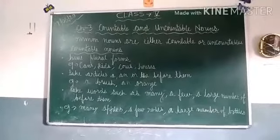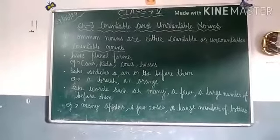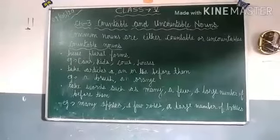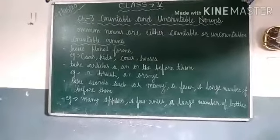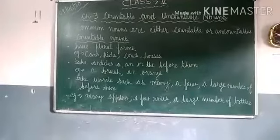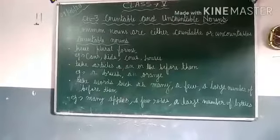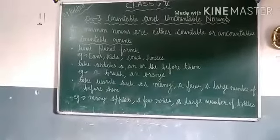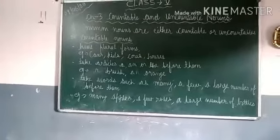First point: common nouns are either countable or uncountable. Now we will start with countable nouns. Countable nouns always have plural forms — jo bhi countable nouns hongi, they will have plural forms. Examples: camps, kids, cows, houses. We can count: two cans, three cows, five cows, six houses, etc.